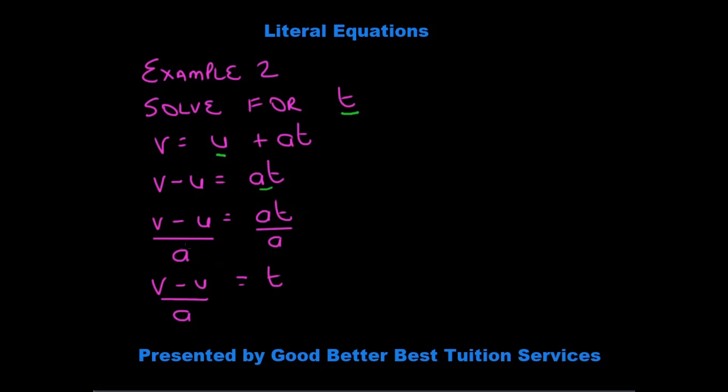But what you do on the right hand side, you must also do on the left hand side. So we have to say v minus u divided by a as well. And therefore, t is equal to v minus u divided by a.